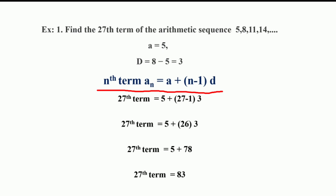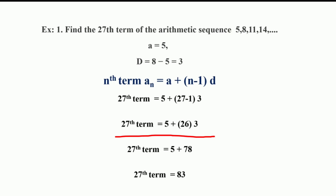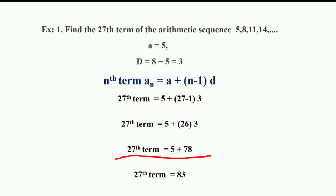The nth term of an arithmetic progression is A plus (N minus 1) × D. Substituting the values of A and D, the 27th term equals 5 plus (27 minus 1) × 3, which is 5 plus 26 × 3, equal to 5 plus 78. So the 27th term is equal to 83.